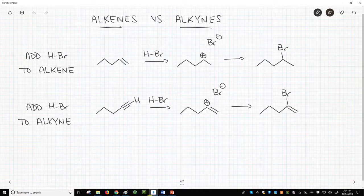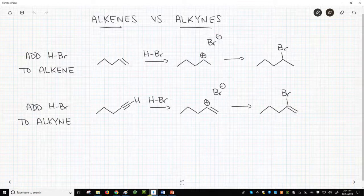On the surface, alkenes and alkynes have a lot in common. Both have the same characteristic feature – a carbon-carbon pi bond.